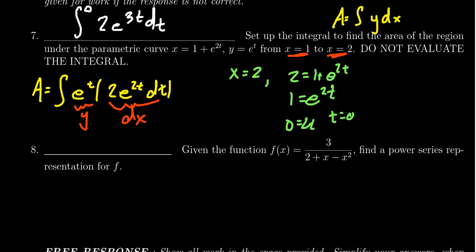For the lower bound, when x = 1, we have 1 = 1 + e^(2t). Subtracting 1 gives 0 = e^(2t). Now, the exponential function can never actually equal zero, so there's no solution here. But although e^(2t) cannot equal zero, it can approach zero.